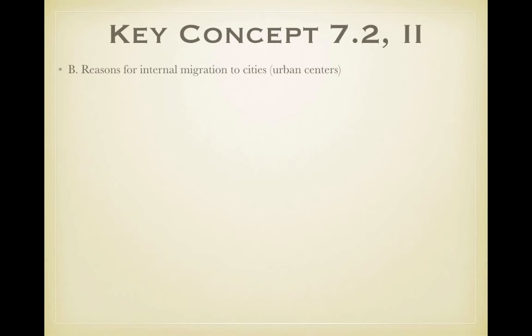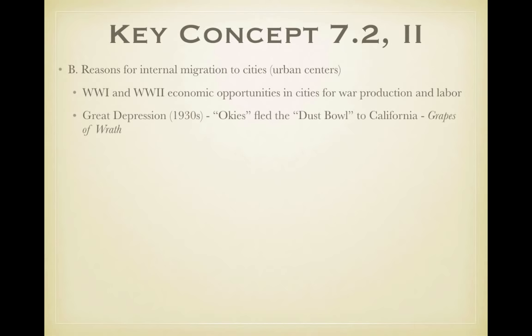There are several reasons for internal migration to cities. World War One and World War Two created economic opportunities in cities for war production and labor. During the Great Depression in the 1930s, the Okies fled the Dust Bowl to California because farming dried up on the Great Plains, and many packed up and moved west — this is the story told in The Grapes of Wrath.